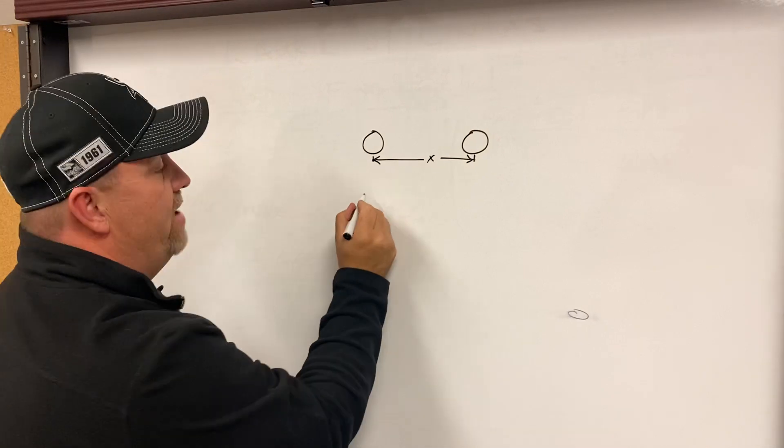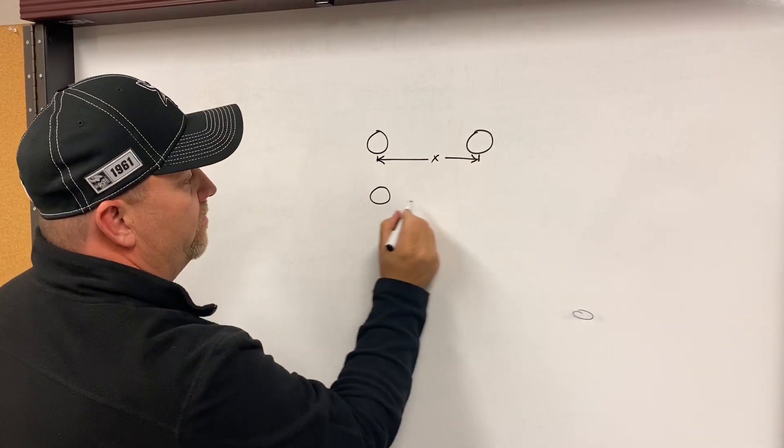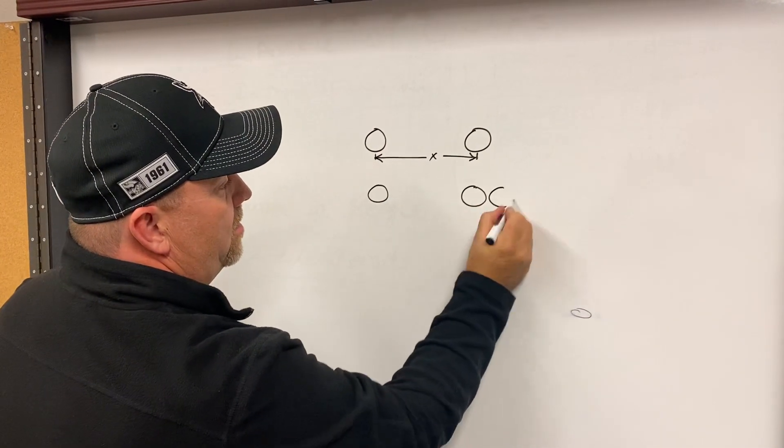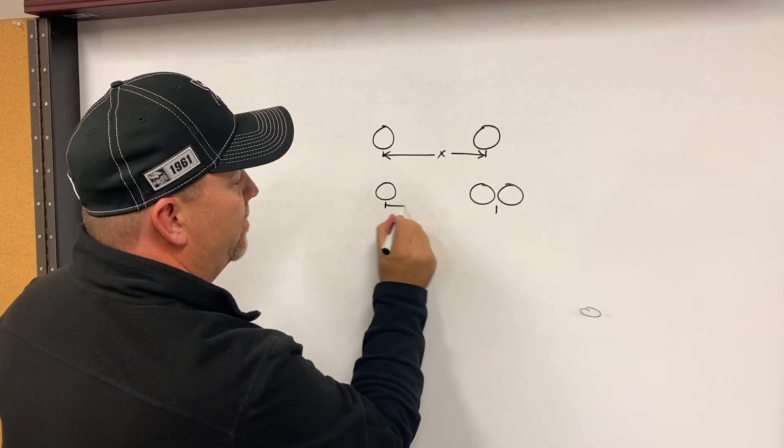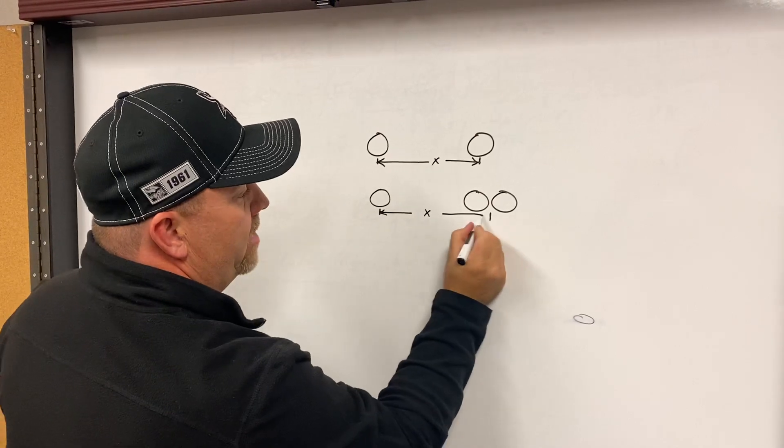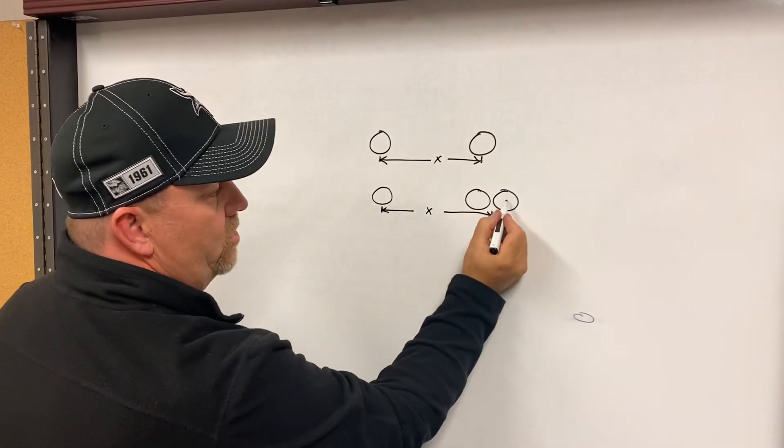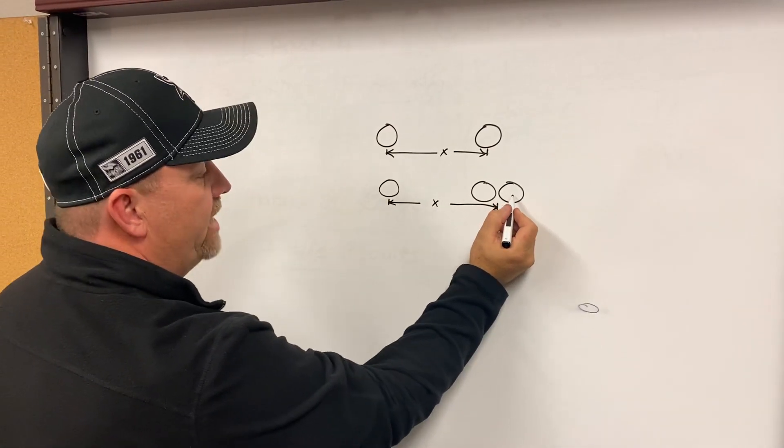If we have a tandem axle truck, you go from the center of the steer axle to the trunnion, right to the center right there. That is your wheelbase. You don't go to the back of the rear axle.